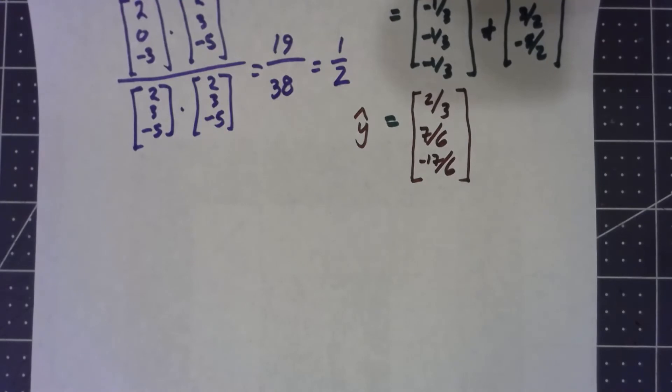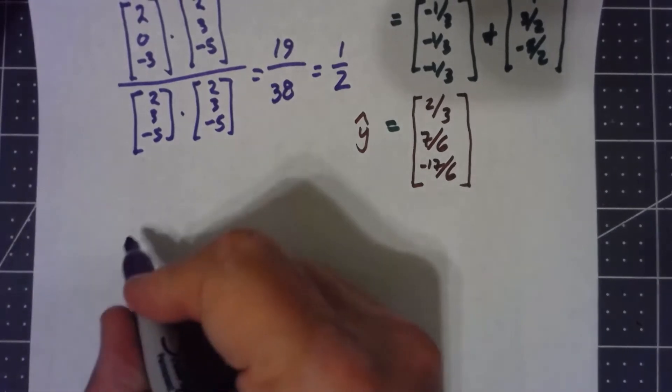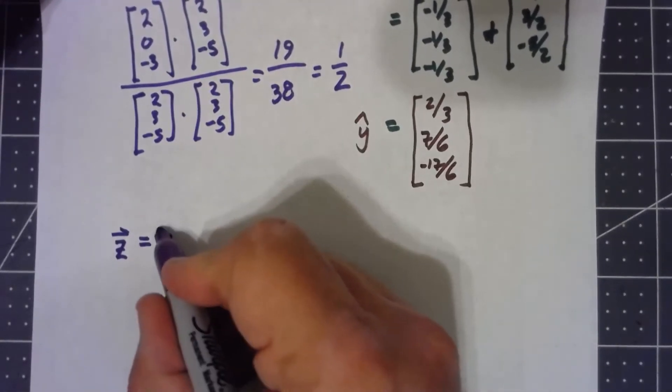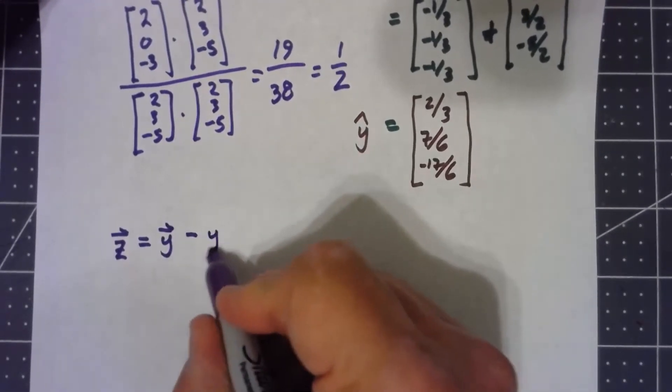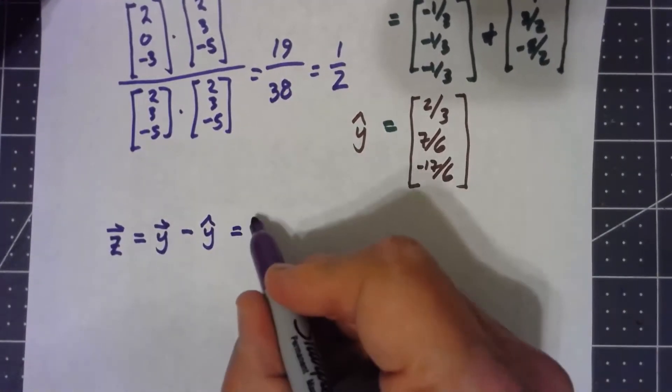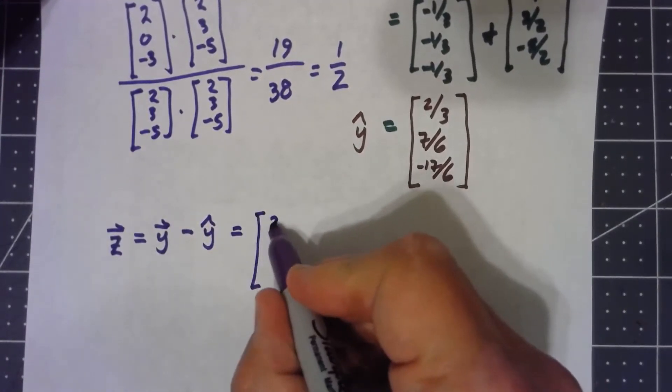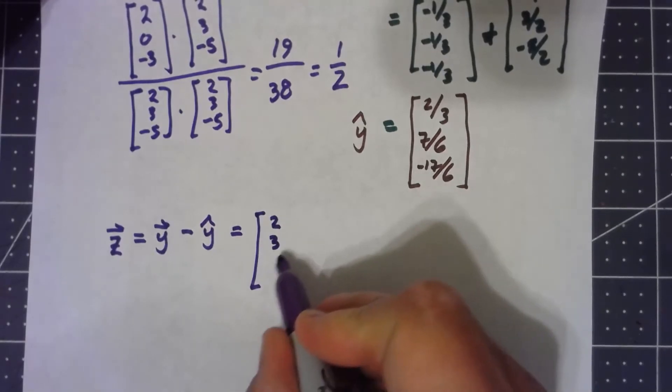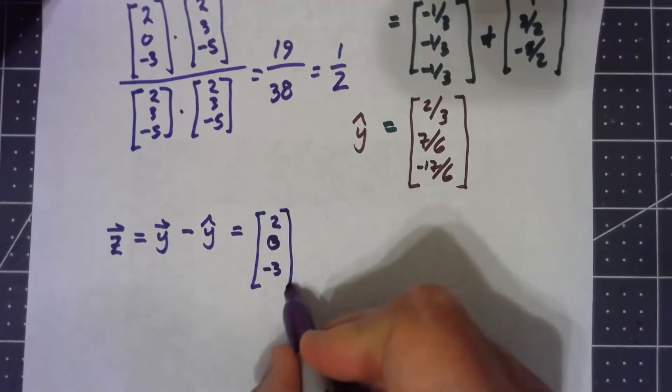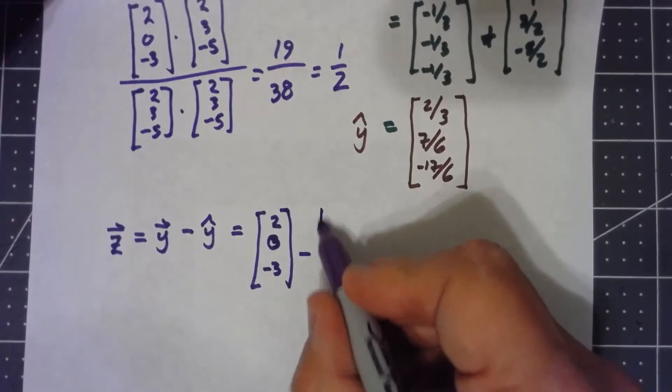The z vector part is my original y vector minus my y-hat. So my original y vector was the (2, 0, -3) minus my y-hat